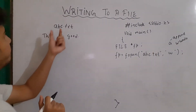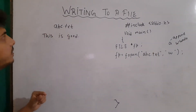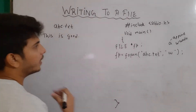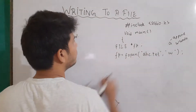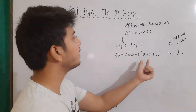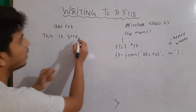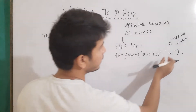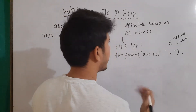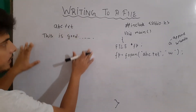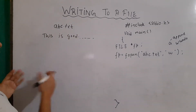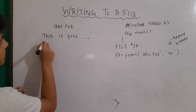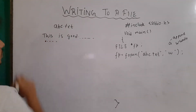Append means: let's suppose that a file exists with the name abc.txt and it is already written there — 'This is good.' When I am opening the file with the A mode, whatever I am writing in this file, it is going to append from that location. And whenever I am opening the file with the W mode, that is the write mode, then all the content that previously existed will be removed or erased, and it will start writing from the starting position.